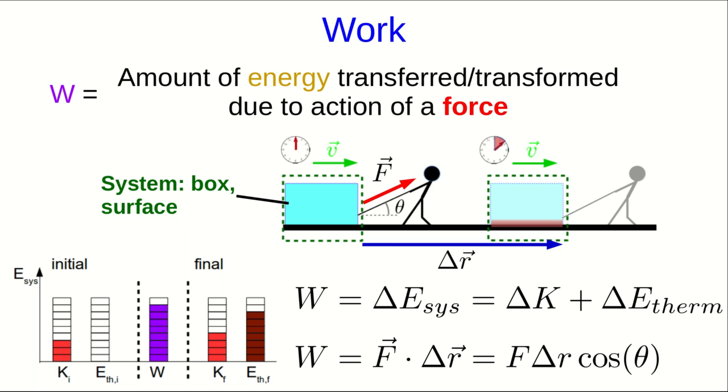And this tells us that if the person pulled with the same magnitude of force over the same displacement, as they did previously where the force and the displacement were parallel, the change in energy would be smaller. The box would probably gain less kinetic energy and probably also less thermal energy.